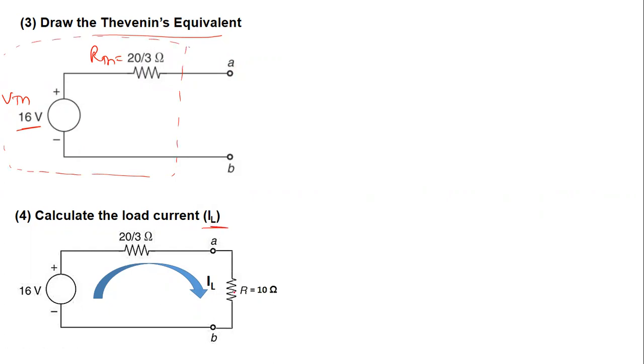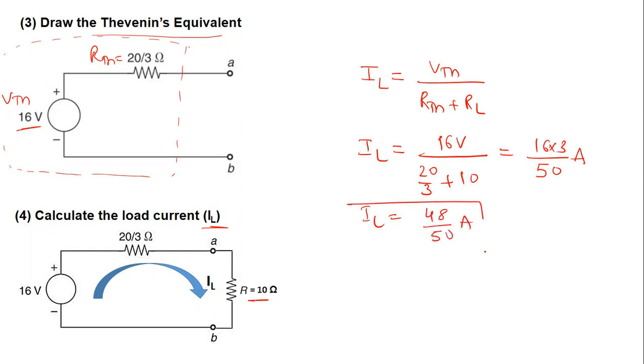The last thing that we will do is calculate the load current. The load current is calculated as IL equals VTH divided by RTH plus RL. So IL equals 16V divided by 20 by 3 plus 10, which equals 16 into 3 divided by 50. IL equals 48 by 50 ampere.